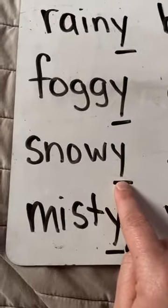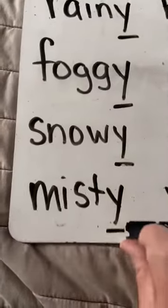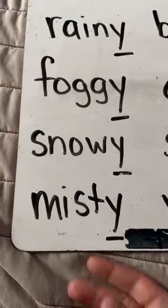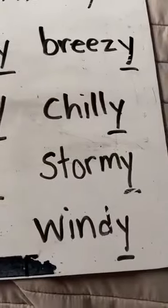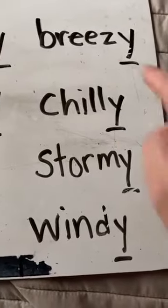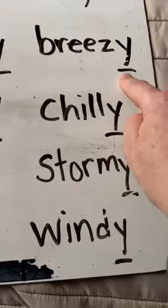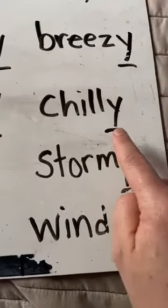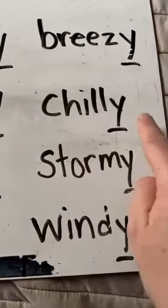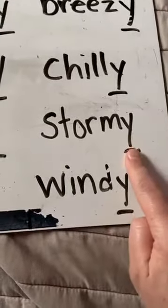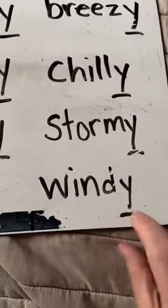Let's try another one and see if Y makes the 'E' sound. Snowy — yes! Here's another one: misty. So what sound did Y make at the end of all our words? Yes, it said 'E.' Now I want you to try and figure these out on your own. Sound: E. Word: breezy. Sound: E. Word: chilly. Sound: E. Word: windy.